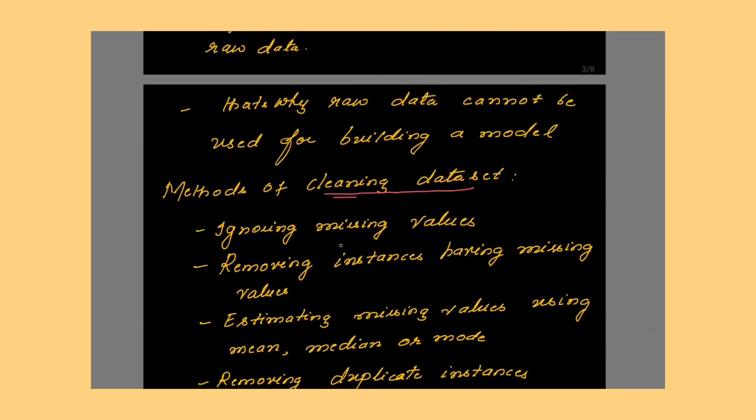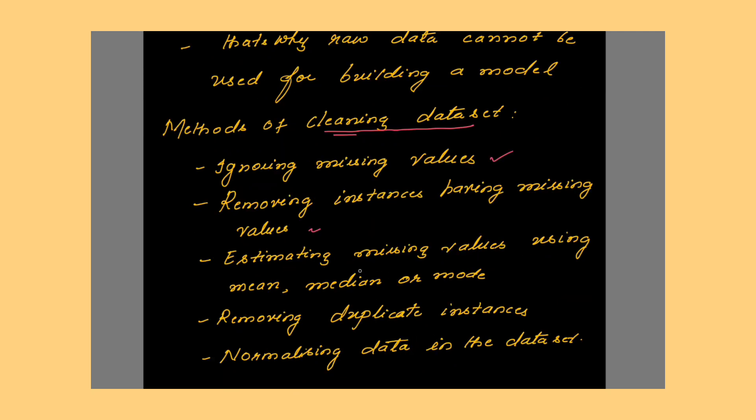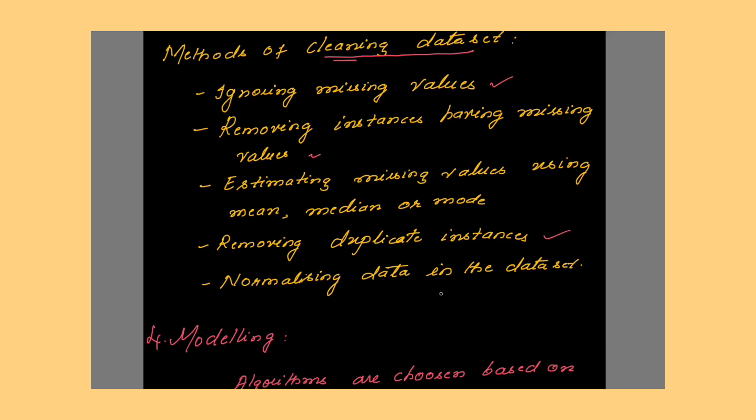The methods of cleaning the dataset are mentioned here. In some cases, you may ignore the missing values that are present in the dataset, but in most cases, you have to remove instances having the missing values. In case if you do not want to remove the missing values, then you can fill those missing values using the mean, median or mode formulas. Then you have to remove the duplicate instances, normalizing data in the dataset.